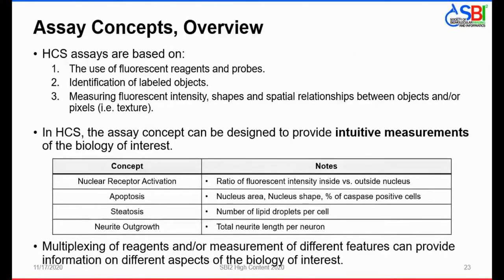Pivoting to a discussion of HCS assay concepts: HCS assays are based on three things — the use of fluorescent reagents and probes, the identification of labeled objects, and measuring fluorescent intensities, shapes, and spatial relationships between objects and/or pixels. The assay concept can be designed to provide intuitive measurements of the biology of interest. For nuclear receptor activation, you measure the ratio of fluorescent intensity inside versus outside the nucleus. For apoptosis, nucleus area, shape, or percent caspase-positive cells. For steatosis, the number of lipid droplets per cell. For neurite outgrowth, total neurite length per neuron. Multiplexing can provide information on different aspects of the biology.